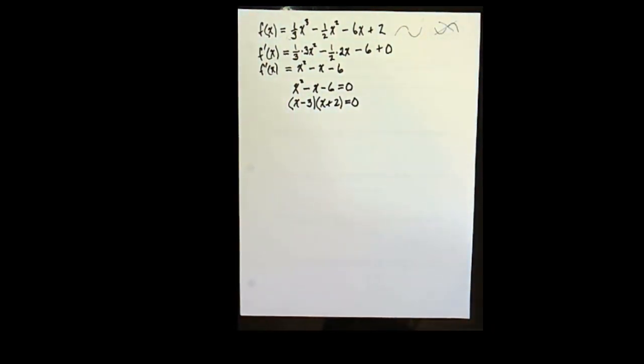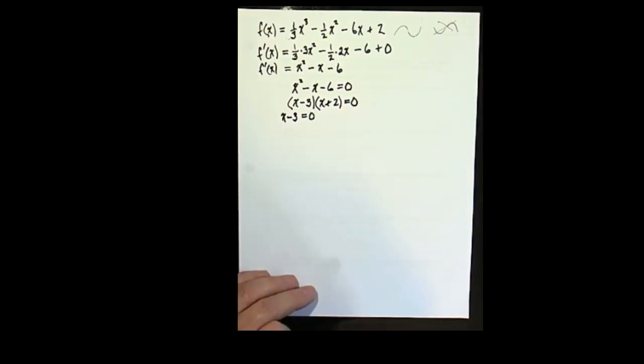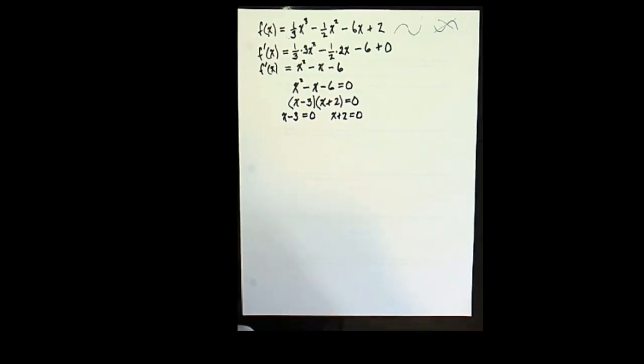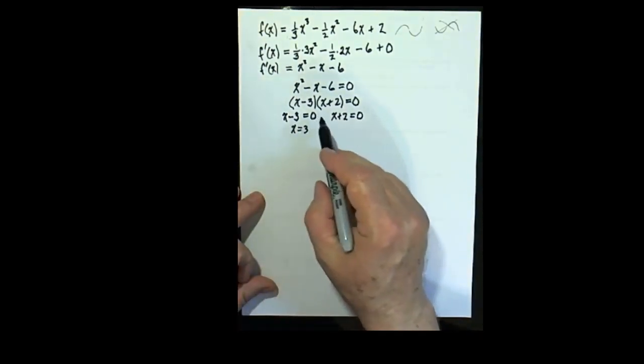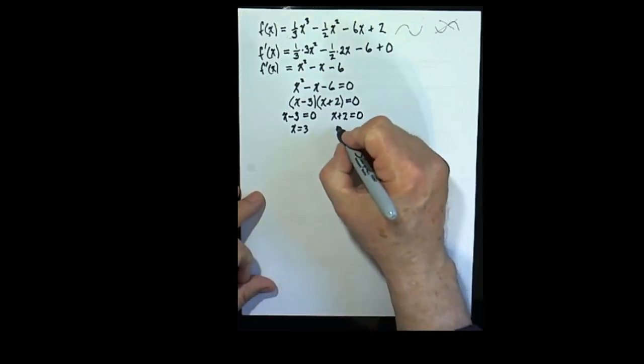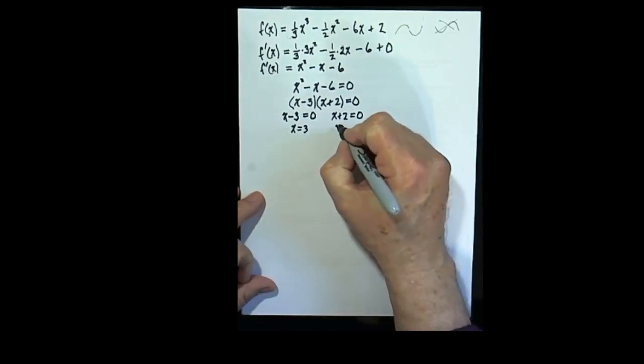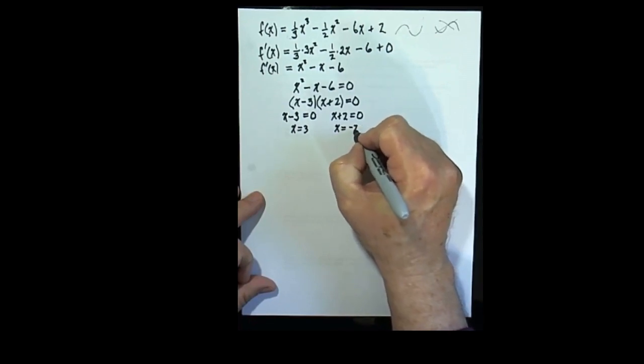So now we've got x minus 3 times x plus 2 is equal to 0. The only way that can happen is for one of those two to be 0. So now we'll apply the zero product property. Either x minus 3 is equal to 0 or x plus 2 is equal to 0. If x minus 3 is equal to 0, then x is equal to 3. And if x plus 2 is equal to 0, then x is equal to negative 2.